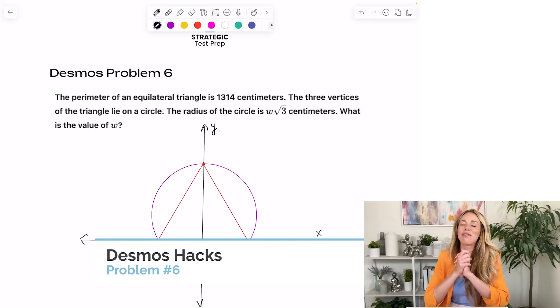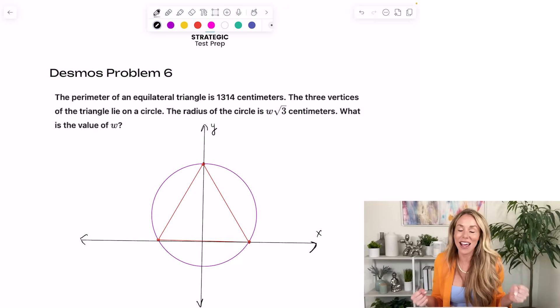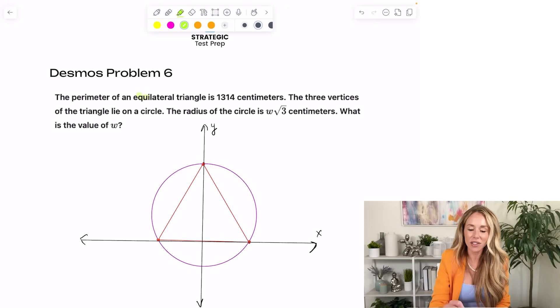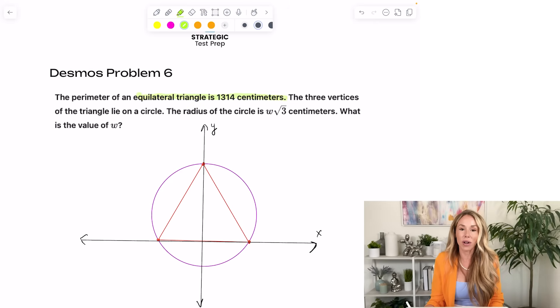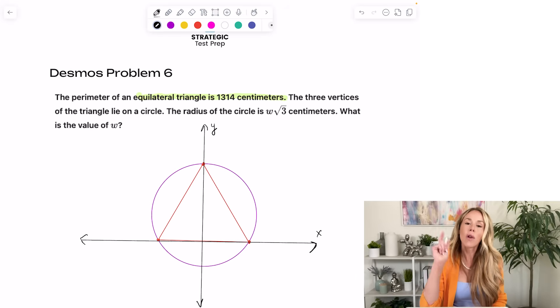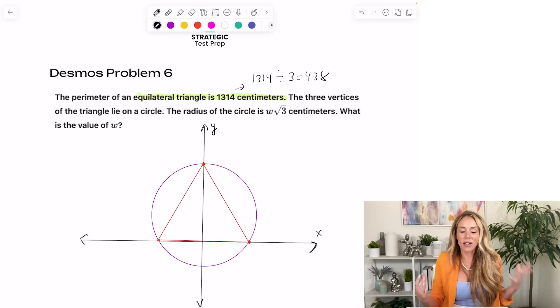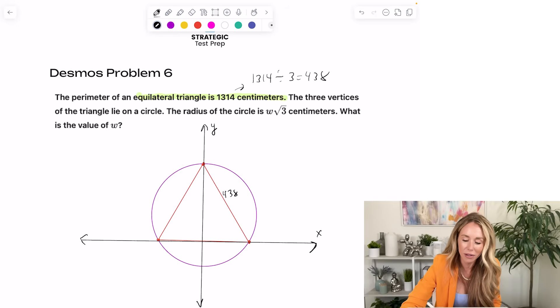Alright, and now we are on to the final problem, which is by far my favorite hack. It's a geometry problem. So at first glance, you would think, oh my gosh, I can't use Desmos for this. But I can assure you, you can. So the first thing is, if they say it's an equilateral triangle and the perimeter is 1,314, we want to know what each side length is. So if you take 1,314 and you divide it by 3, you get 438. So as you can see, I've already drawn a triangle on here in an xy coordinate plane, and I'll explain that in a second. But I'm going to go ahead and label each side 438.